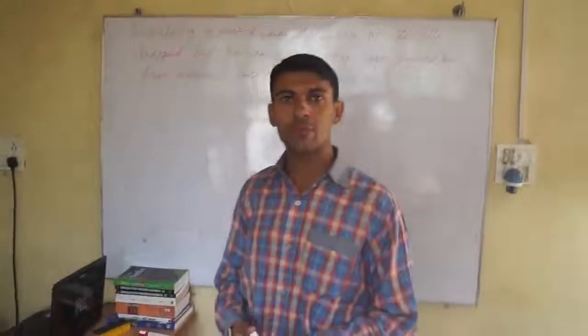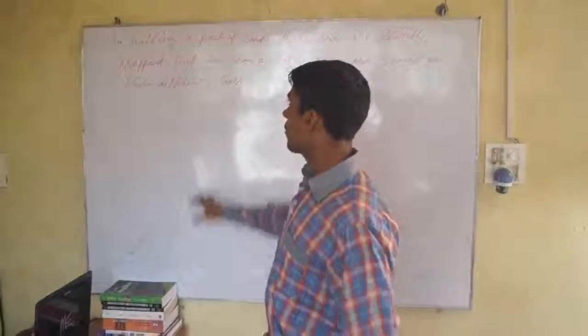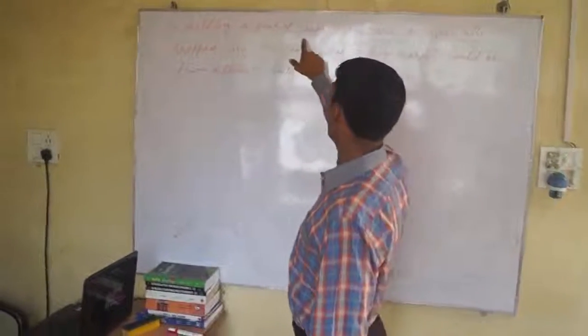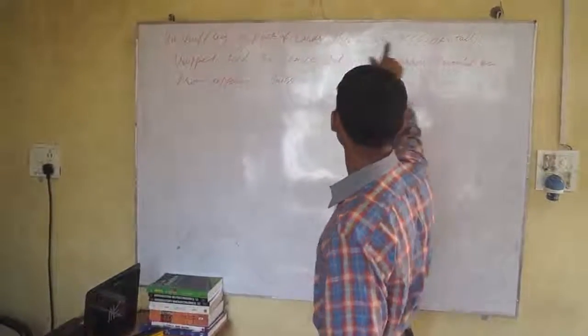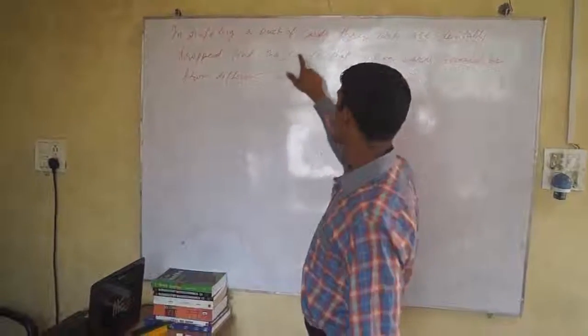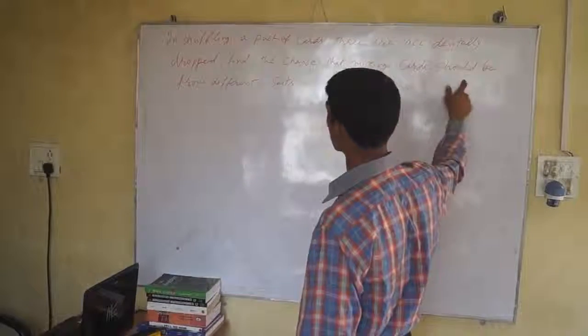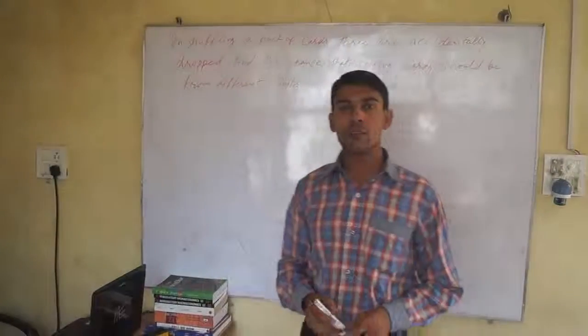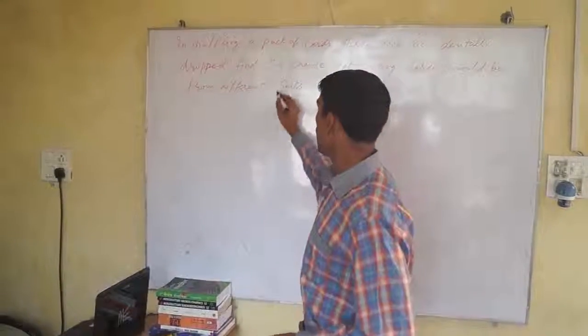Students, next class of probability. We have another problem. In shuffling a pack of cards, three cards are accidentally dropped. Find the chance that the missing cards should be from different suits. There are totally four suits of card suits in this category.